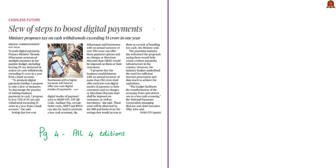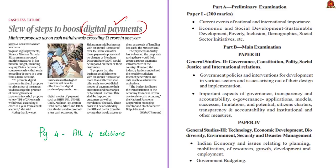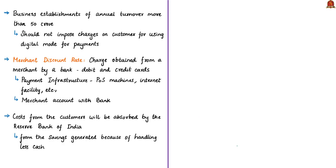Moving on to the next article, which talks about steps taken in the recent budget announcement to transform the cash-driven economy to a less-cash economy. This article discussion will be relevant under current events of national importance and economic development. It will also be helpful in the main syllabus in GS Paper 2 under government policies and interventions in various sectors and also in e-governance. It is also relevant in GS Paper 3 under Indian economy.